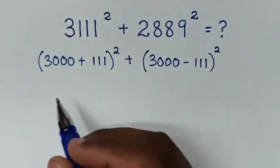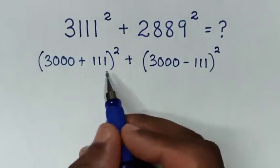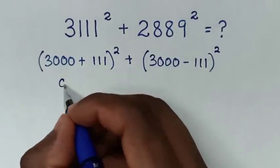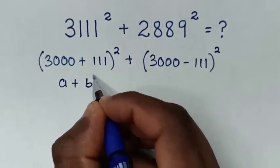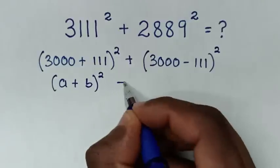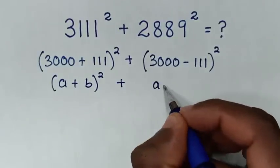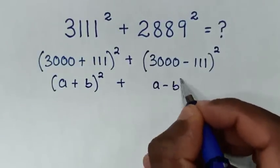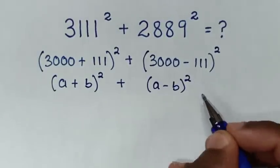Then the next step: this part is in the form of (A plus B) squared, then plus this part which is in the form of (A minus B) squared.